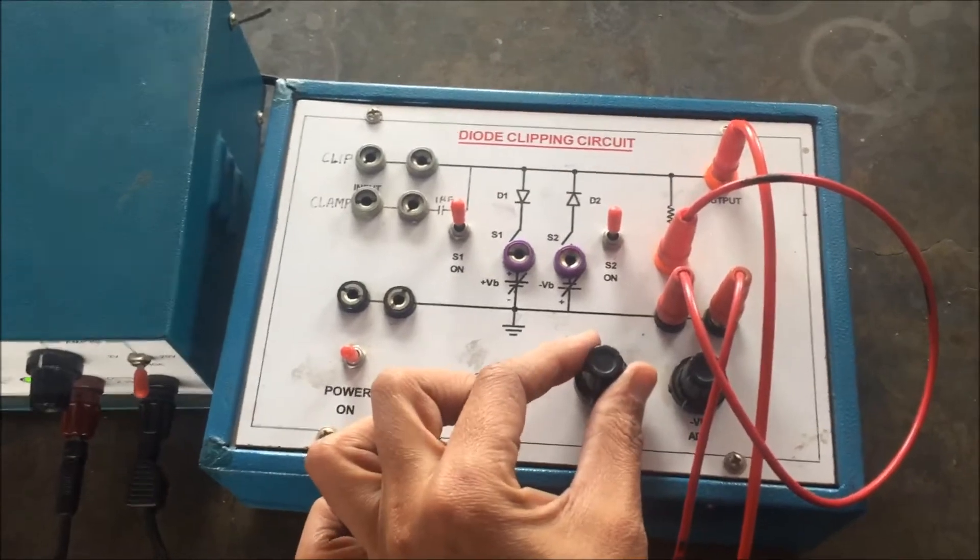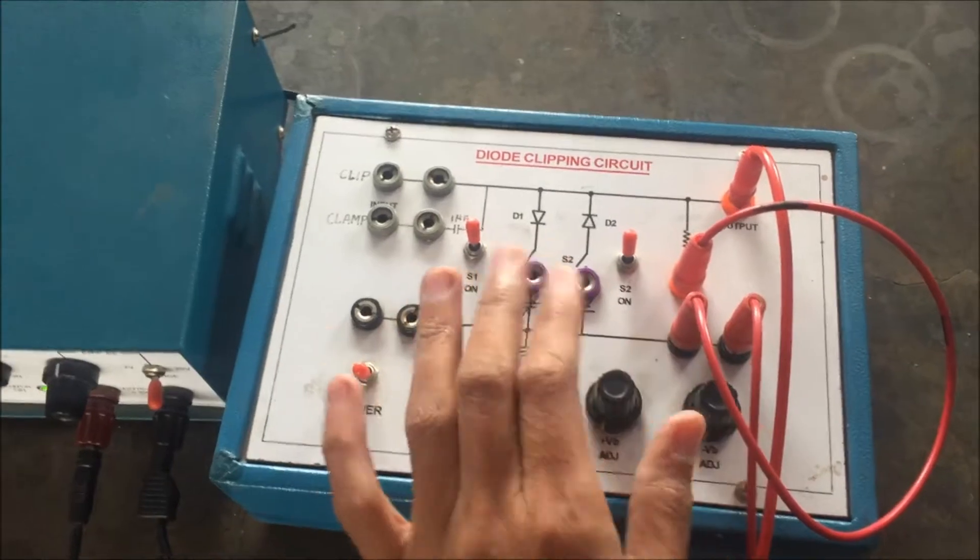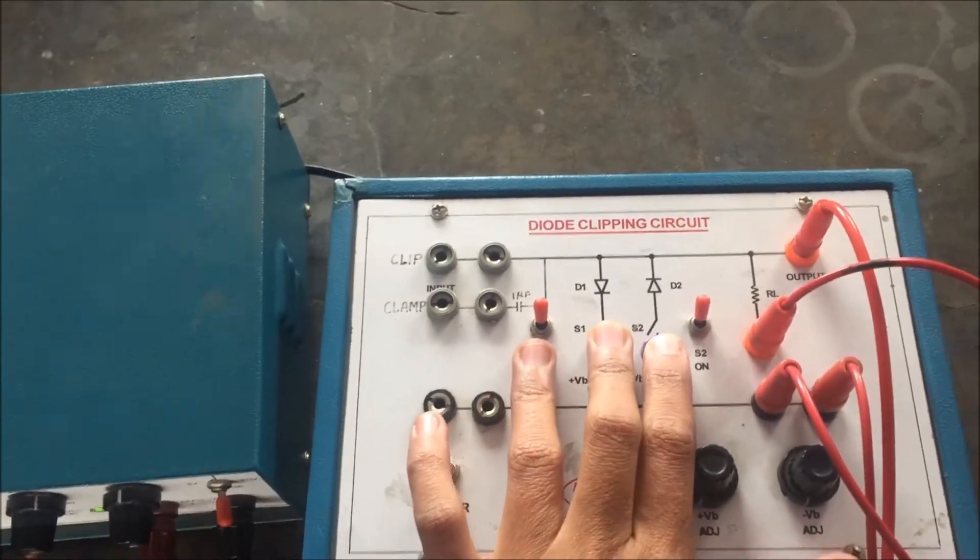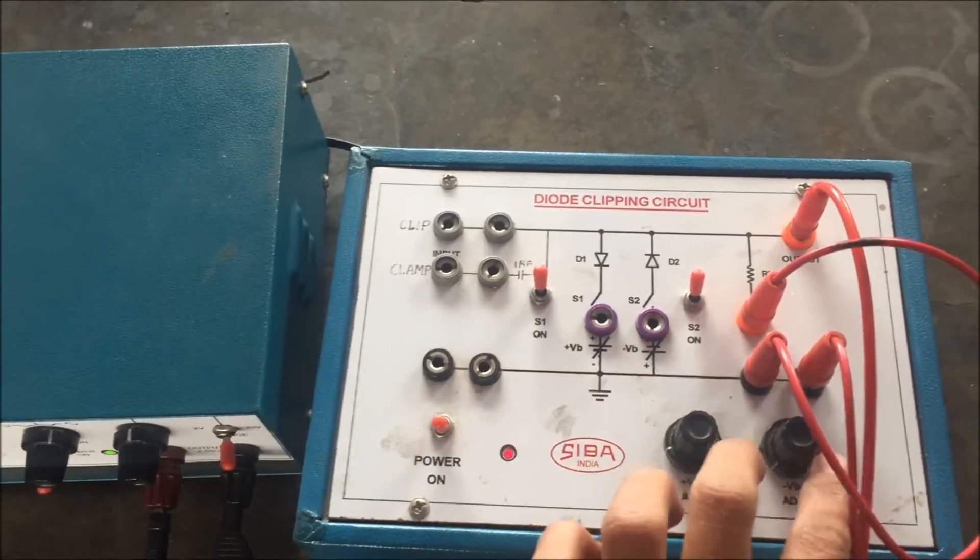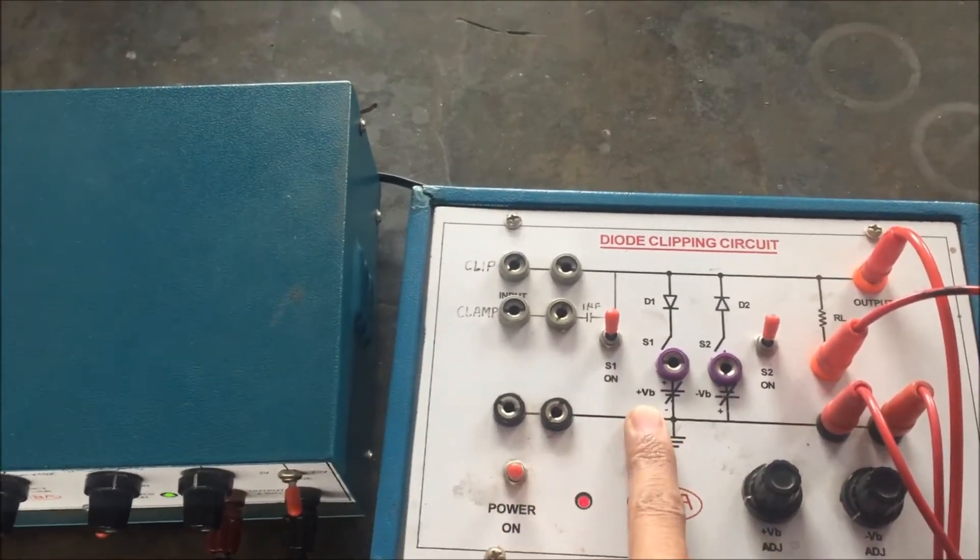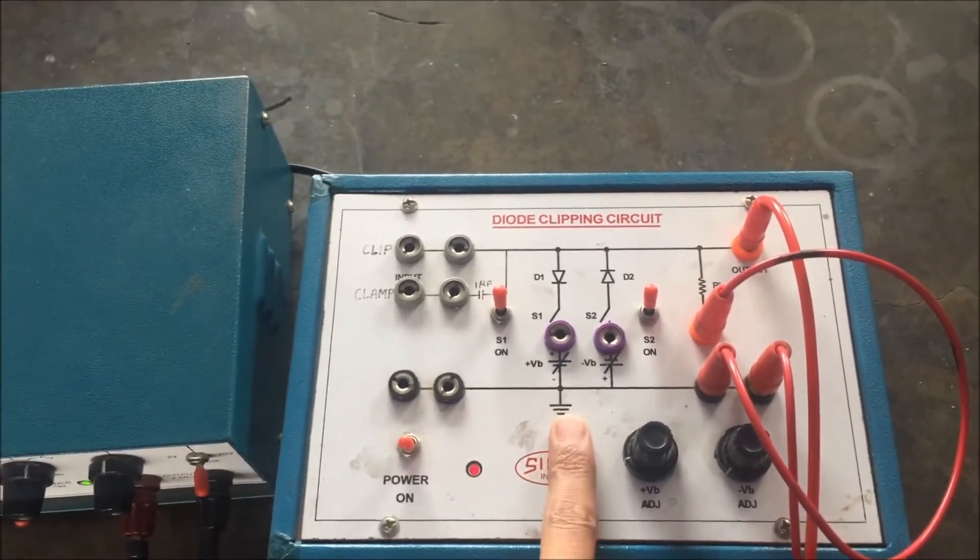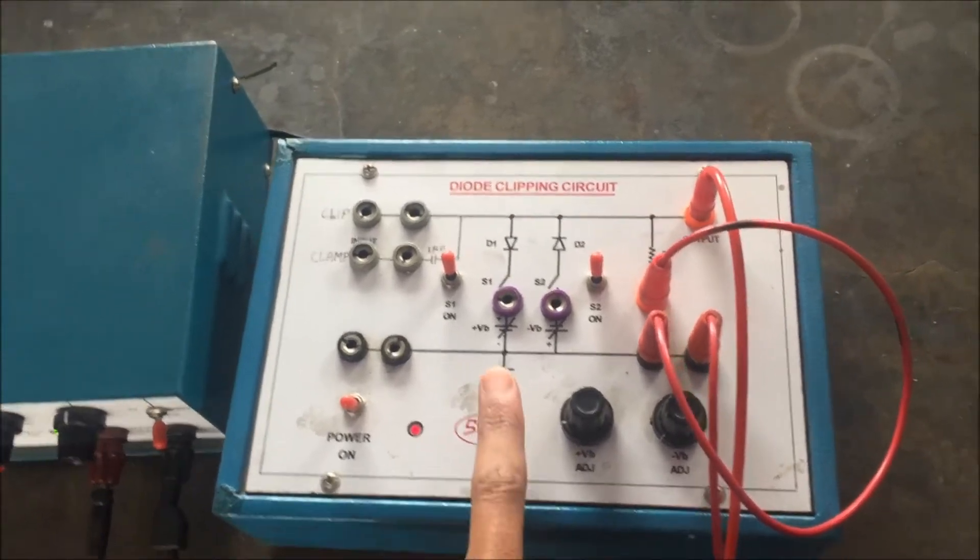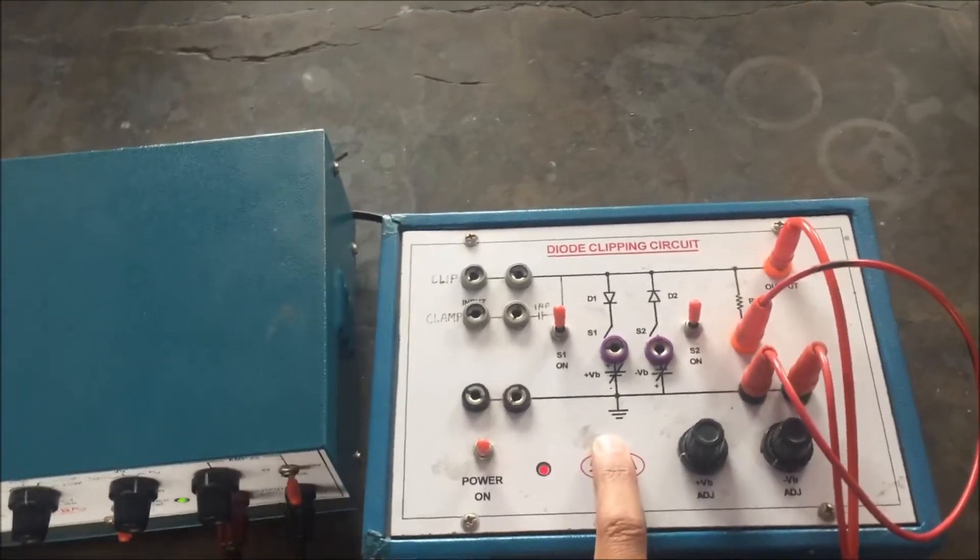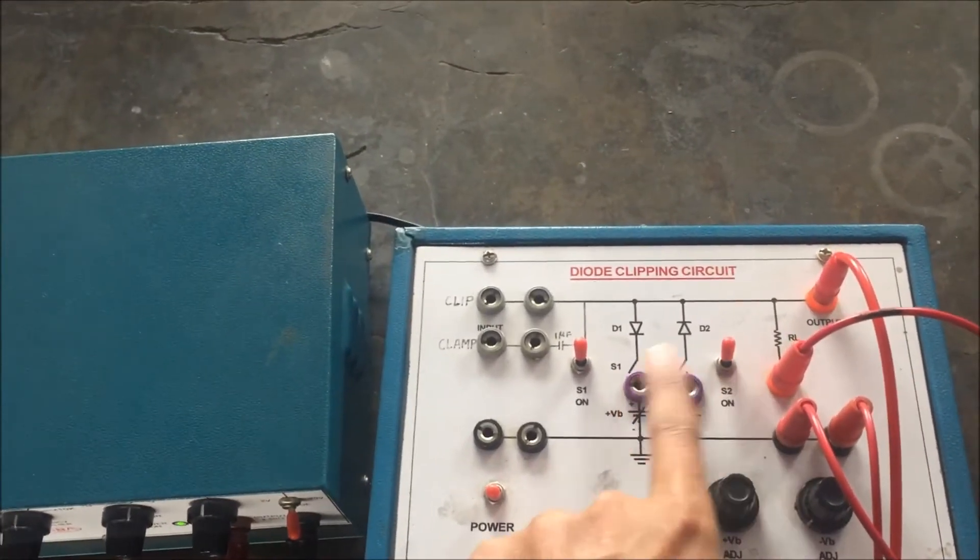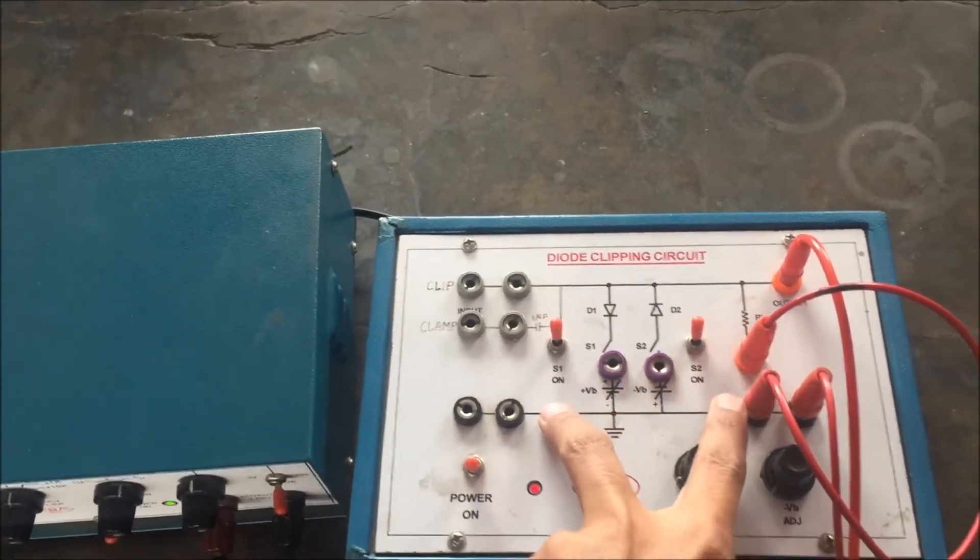This is the value of DC voltage. When it is 0, then this is called unbiased clipper. And when you introduce some value from the DC battery, some voltage from the DC battery, then this is called biased clipper. So one by one we will use these three things: positive clipper, negative clipper, and combination clipper.